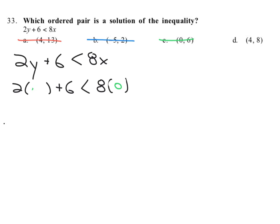And trying out this final value, or final set of coordinates, I should say. 4, 8. X is 4. Y is 8. And when we multiply this through, we get 2 times 8 is 16. 16 plus 6 is less than 8 times 4, which is 32. So 16 plus 6 is 22. And is 22 less than 32? Yeah, it is. Okay? We found it. It is d.